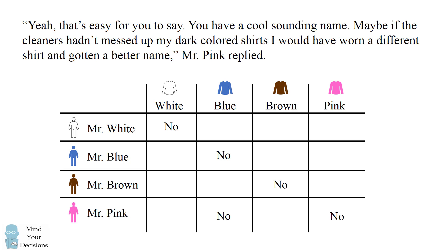When Mr. Pink replies, he says that his cleaners messed up his dark colored shirts. This means he was not wearing a brown colored shirt either. By process of elimination, that means Mr. Pink was wearing a white shirt. Furthermore, since each person is wearing a different colored shirt, that means no one else is wearing a white shirt.